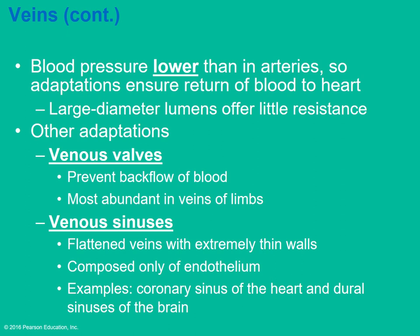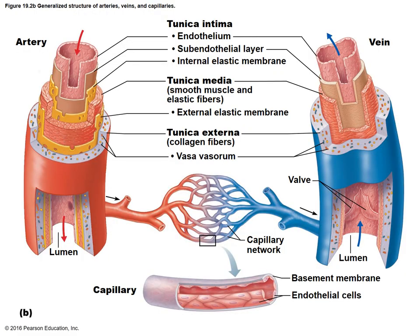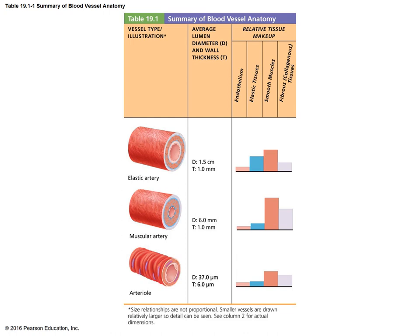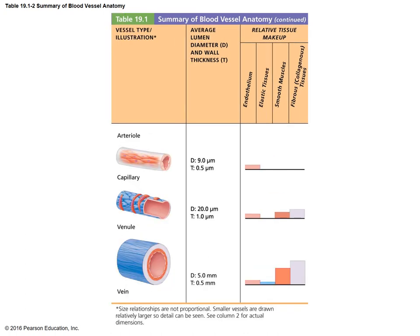Vein sinuses are where veins are flat with very thin walls. An example is the coronary sinus, which drains blood from the heart muscle itself back into the heart. Here is a diagram of various blood vessels and a chart comparing average diameter, wall thickness, and the different layers within each vessel type.